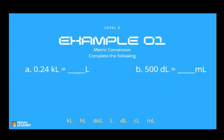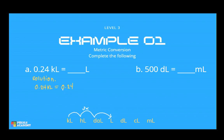We have 0.24 KL — ano kaya ang value nya kapag convert sa liter? To convert from kiloliter to liter, we start at kiloliters and move 3 steps to the right to obtain liters. So bilang tayo: 1, 2, and 3. Hence, we move the decimal point 3 places to the right. So meron tayong 0.24 KL — magmove tayo ng tatlong beses to the right, at madadagdagan tayo ng 0. This is the same as multiplying 0.24 by 1,000. Thus, 0.24 KL converts to 240 liters.